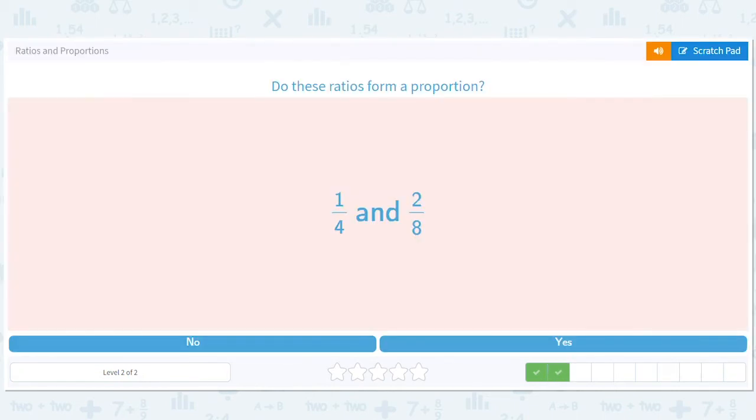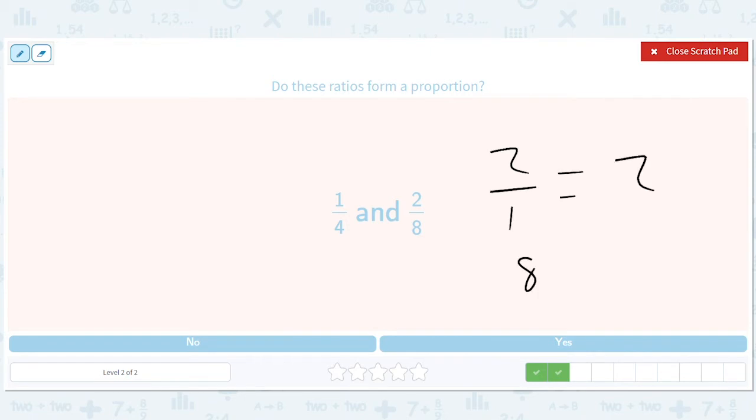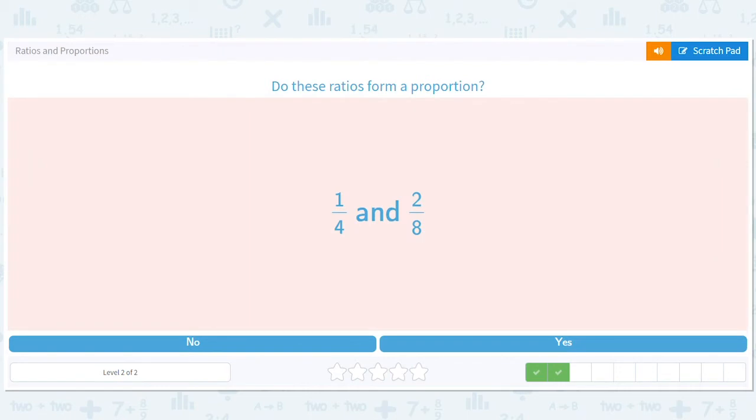Okay, how about these? All right, let's do it. So what is two divided by one? Well, it's two. What's eight divided by four? Well, it's also two. Great. So far, we're on a yes, yes, yes sort of streak here, right? So yes.